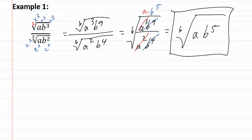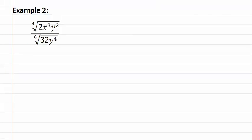Let's look at example two. Once again, we do not have indexes that match, so let's start by making them match. Remember, we need to first take any numbers and turn them into their prime factorizations, which means that 32 actually becomes 2 to the fifth.